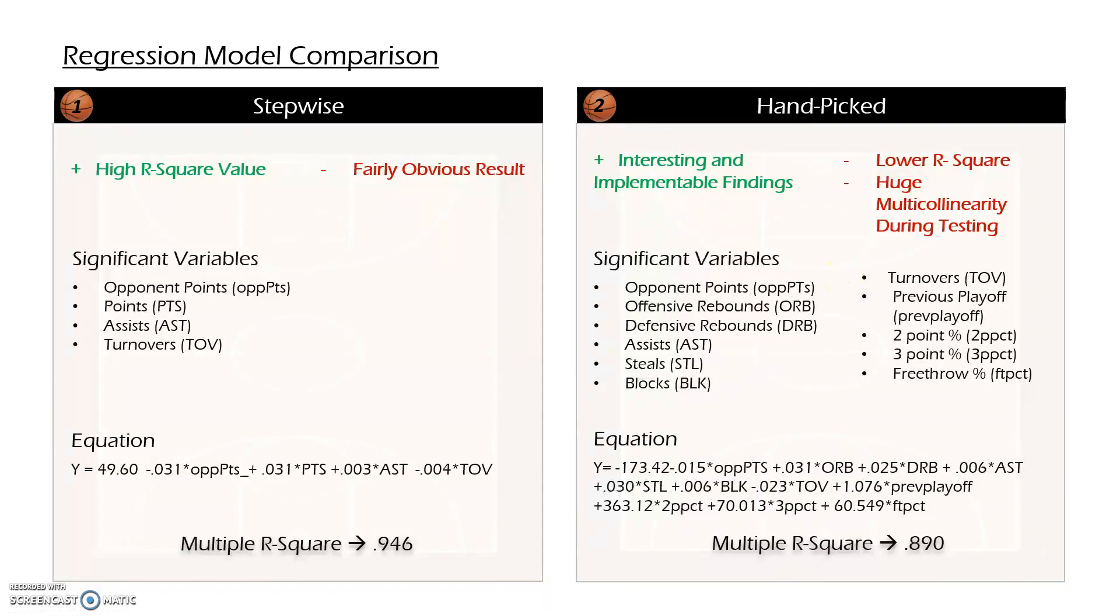Going on to my regression models, I built a stepwise and I handpicked a model. So the stepwise had really high R-square value, almost 95% of the variance in the data is explained by the model. However, it's pretty obvious. So opponent points against, points for, assists and turnovers doesn't really tell us much about the actual components that contribute to wins. So if I was a basketball coach and owner of an organization, I would be more concerned with what smaller factors drive wins rather than the big obvious ones.